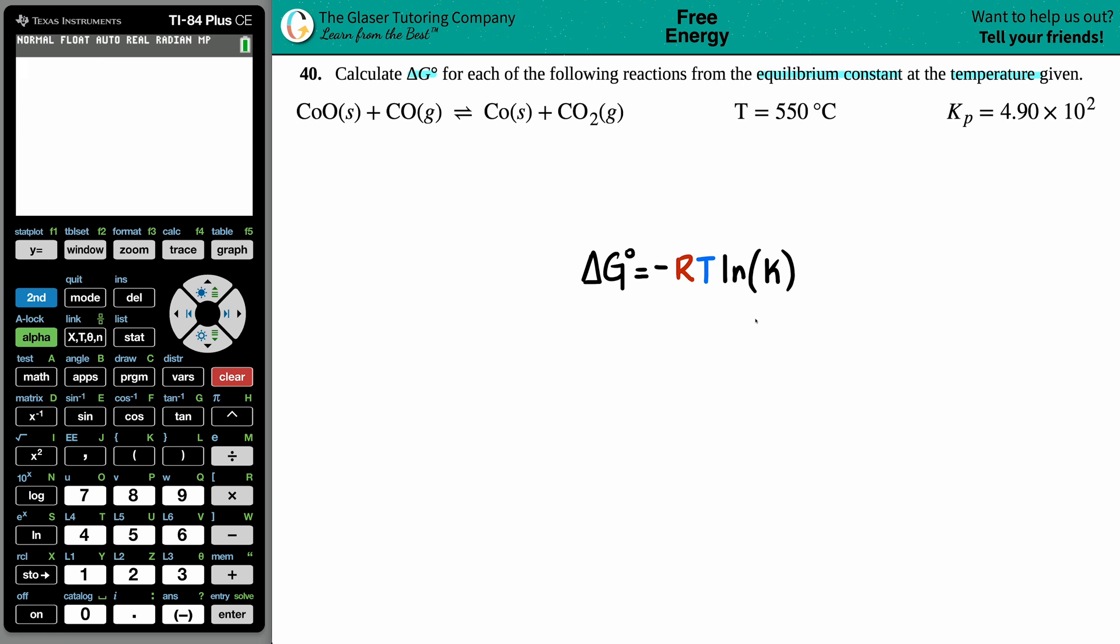In this case our K value is 4.90 × 10². Let's just find out what the R value and the T value is. Now the R value for this equation is the standard 8.314. The units if you're using 8.314 is joules per mole times kelvin.